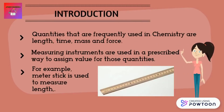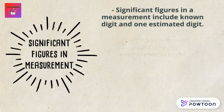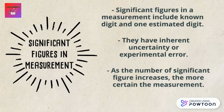You may already be familiar with some quantities frequently used in chemistry such as length, time, mass, and force. All these quantities are measured using measuring instruments in a prescribed way to assign values. For instance, to determine the length of an object we use a meter stick. Significant figures in measurements include known digits plus one estimated digit, and measurements usually inherit uncertainty or experimental errors. As the number of significant figures increases, the more certain the measurement.